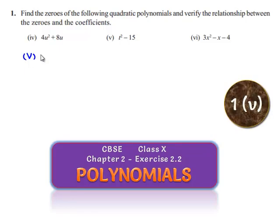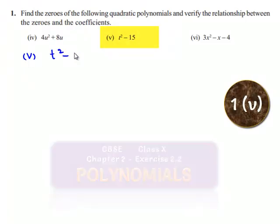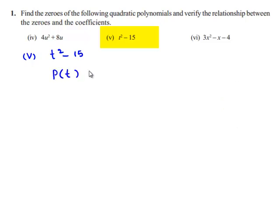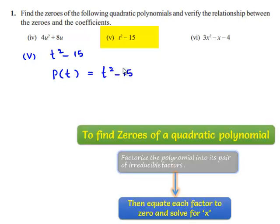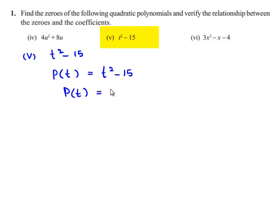Now coming to the fifth problem, which is t² - 15. The polynomial can be written as P(t) = t² - 15. In order to find the zeros of the polynomial, let us equate the given polynomial P(t) = 0.